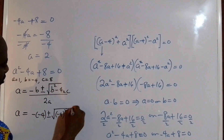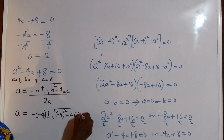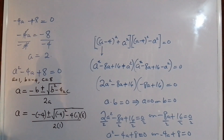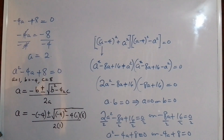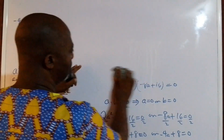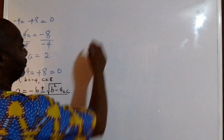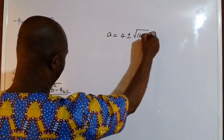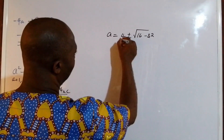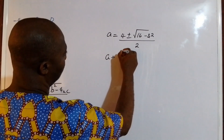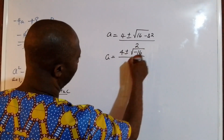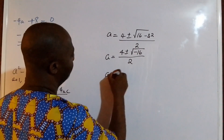Substituting in, we have a equals minus (minus 4) plus or minus the square root of (minus 4) squared minus 4 times 1 times 8, all over 2 times 1. This simplifies to a equals 4 plus or minus the square root of 16 minus 32, all over 2, which gives a equals 4 plus or minus the square root of minus 16, all over 2.